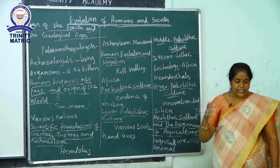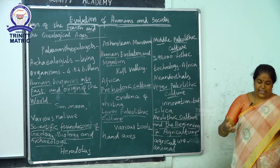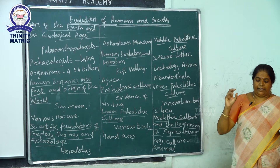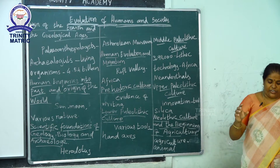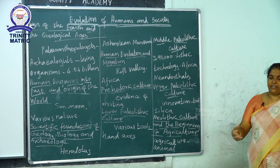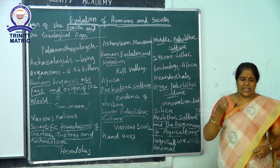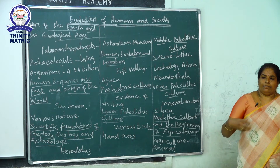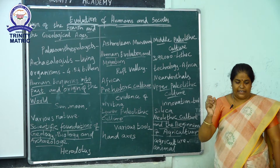In the Iron Age, people started practicing agriculture. They first cultivated millets and later developed cultivation of rice.